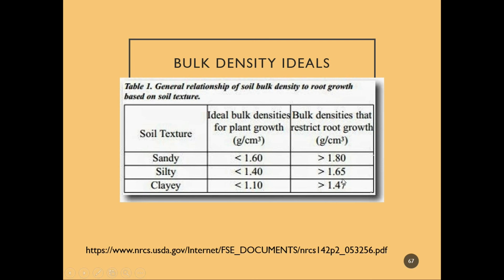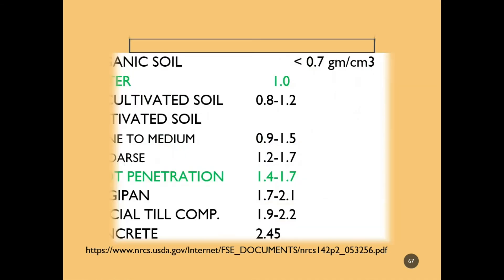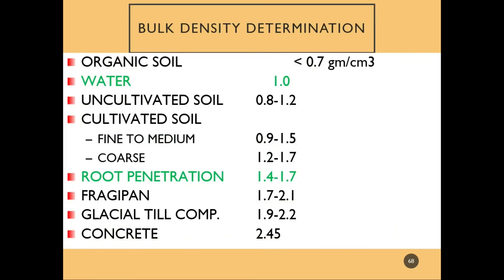Always keep soil texture in mind when thinking about bulk density. For reference: water has a bulk density of 1, uncultivated soil is 0.8 to 1.2, root penetration is limited at 1.4 to 1.6, and concrete has a bulk density of 2.45.